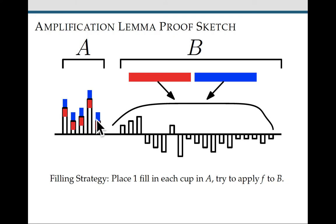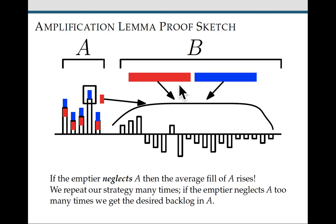The emptier might choose to similarly allocate its resources, allocating one fill, or emptying from every cup in a, and allocating the rest of its emptying resources to b. Or it might not.